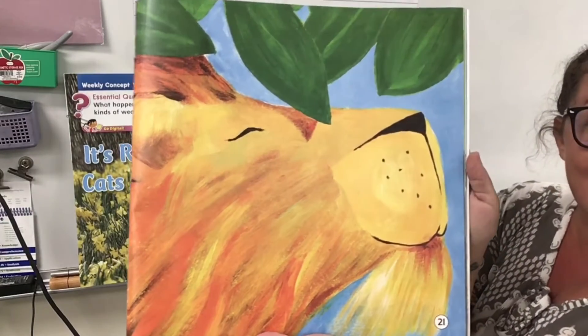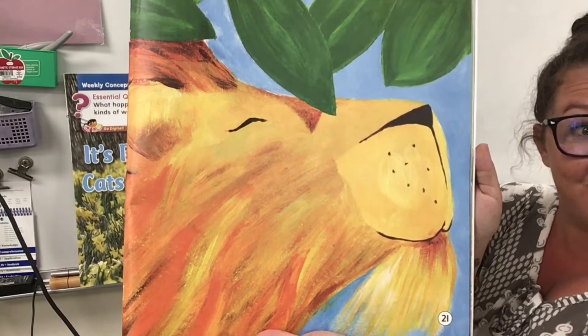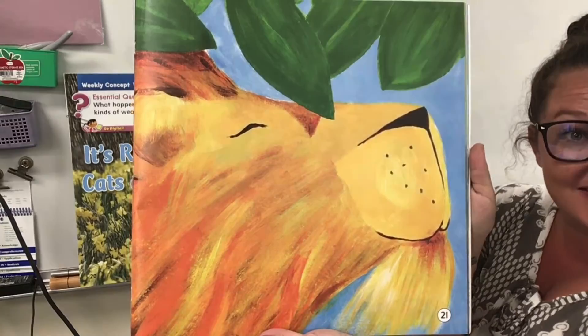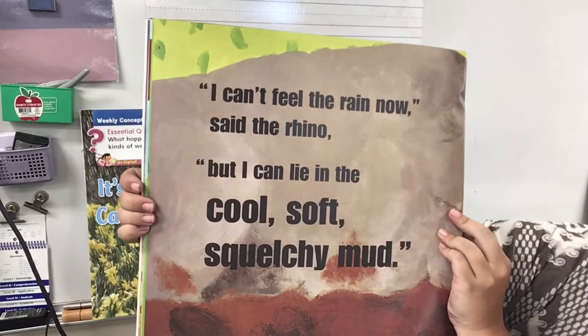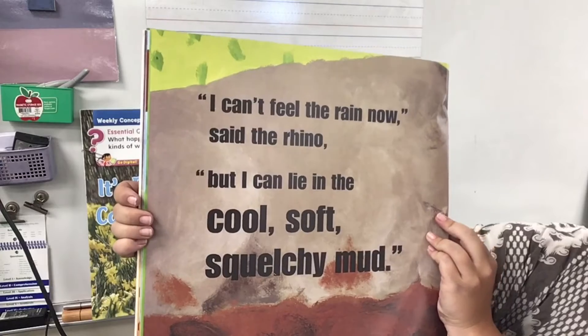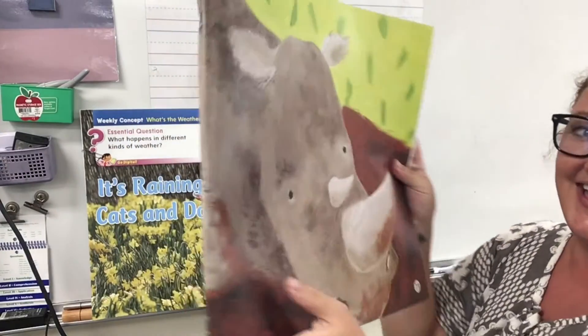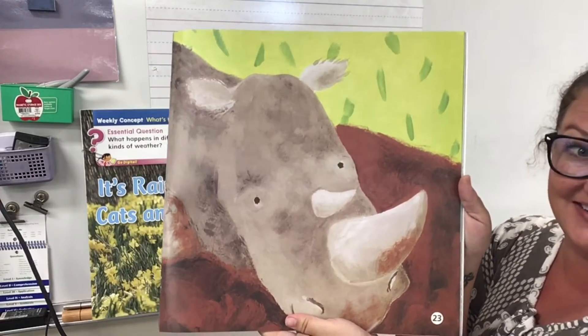'I can't taste the rain now,' purred the lion. 'But I can enjoy the shade of these big green leaves.' Looking at the lion in this picture, his face looks very content — he looks very happy. 'I can't feel the rain now,' said the rhino. 'But I can lie in the cool, soft, squelchy mud.' There's the rhino enjoying the mud. When the rain came down to the red soil and mixed with it, it turned into mud.